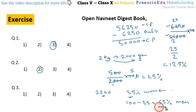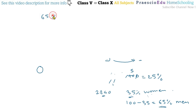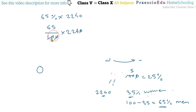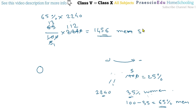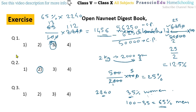We find 65% of 2240: that is 65 divided by 100, multiplied by 2240. After cancelling zeros and simplifying, 13 multiplied by 112 gives us: 13 twos are 26, carry 2, 13 ones are 13 plus 2 equals 15, giving 1456. So 1456 are the men shareholders, which is given in option number 1.